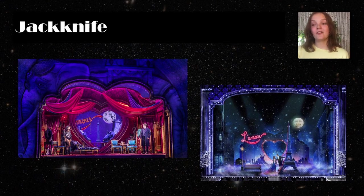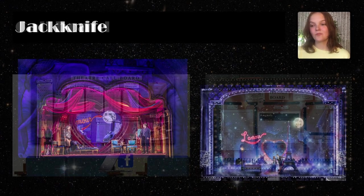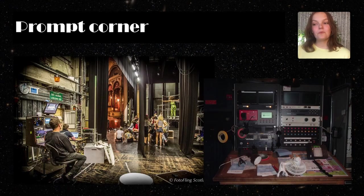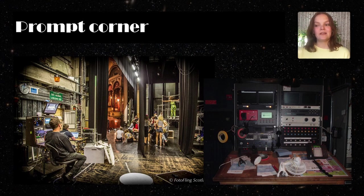Here you see a large example of this — the entire room has been rotated and is now the sky behind them. A call board is a backstage bulletin board where messages about rehearsals, cast changes, and other important information are displayed. The prompt corner, or prompt box, is where the prompter — sometimes known as the stage or deputy stage manager — stands to organize the performance and remind actors of their lines as needed.